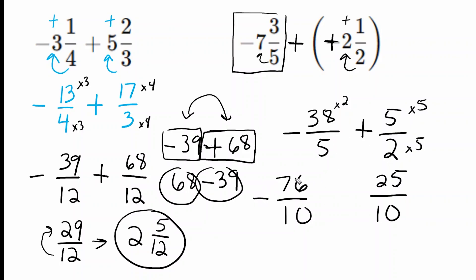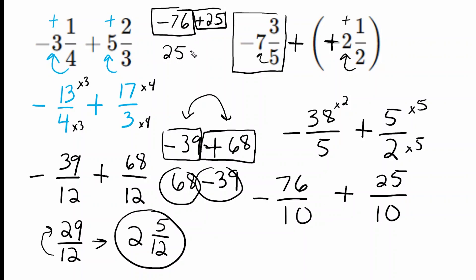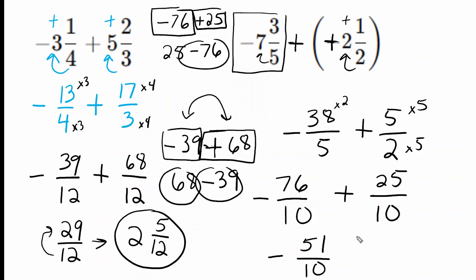We have negative 76 tenths and positive 25 tenths, so let's consider just the numerators: negative 76 plus 25. We can rewrite this as 25 minus 76, though notice we're taking away more than we start with. Because the signs are opposite, we subtract the two values: 76 minus 25 is 51. Our denominator stays the same — 10 — and we have more negatives, so our answer is negative 51 tenths. Converting back to a mixed number, that is negative 5 and 1 tenth. And that is our final solution.